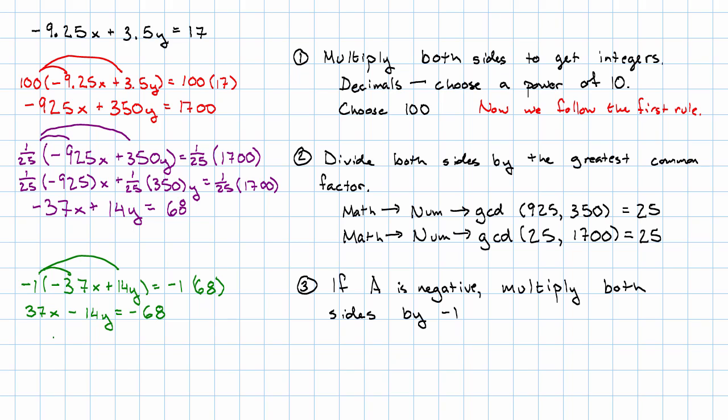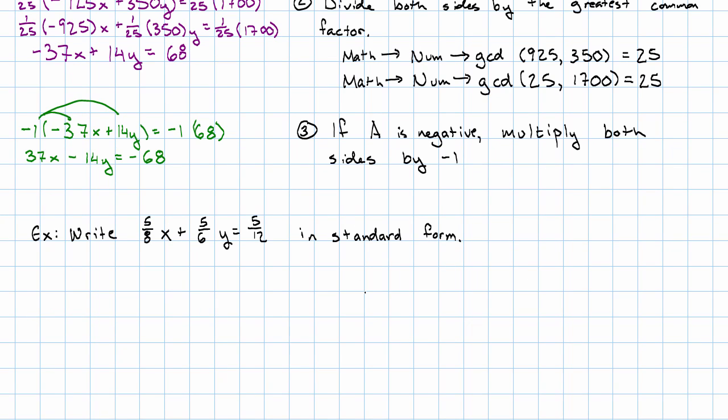Let's see an example where instead of decimals I have fractions. Suppose we want to write the equation 5/8 x plus 5/6 y equals 5/12 in standard form. Step 1 is still multiply to get integers. If you're really comfortable coming up with common multiples, you can just use the least common multiple of the denominators. Or, you can just use one denominator at a time. I would use option 1 if I had numbers that it was easy to see their least common multiple, and option 2 if the numbers were more unpleasant.